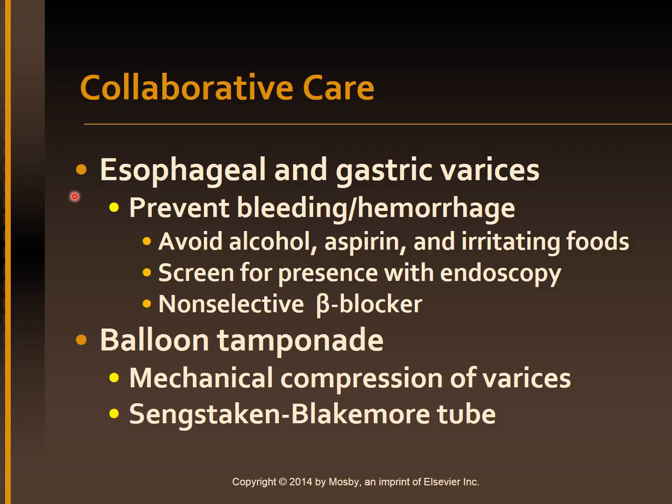For esophageal and gastric varices, the main therapeutic goal is to prevent bleeding and hemorrhage. The patient should avoid ingesting alcohol, aspirin, and NSAIDs. All patients with cirrhosis should have upper endoscopy (EGD) done to screen for varices. Diagnosis of variceal bleeding is made by endoscopic examination as soon as possible. Patients with varices are started on a non-selective beta blocker like nadolol or propranolol to reduce the incidence of hemorrhage and decrease high portal pressure. Balloon tamponade or mechanical compression of varices may also be done. The Sengstaken-Blakemore tube is most commonly used to control bleeding.